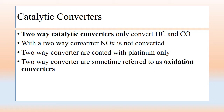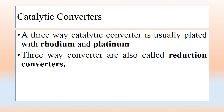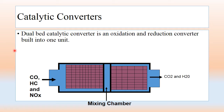Two-way converters are sometimes referred to as oxidation converters as they only convert HC and CO into CO2. Three-way catalytic converters convert all three exhaust gases — HC, CO, and NOx. Three-way converters are usually plated with rhodium and platinum and are also called reduction converters. The dual-bed catalytic converter is both an oxidation and reduction converter built into one unit.